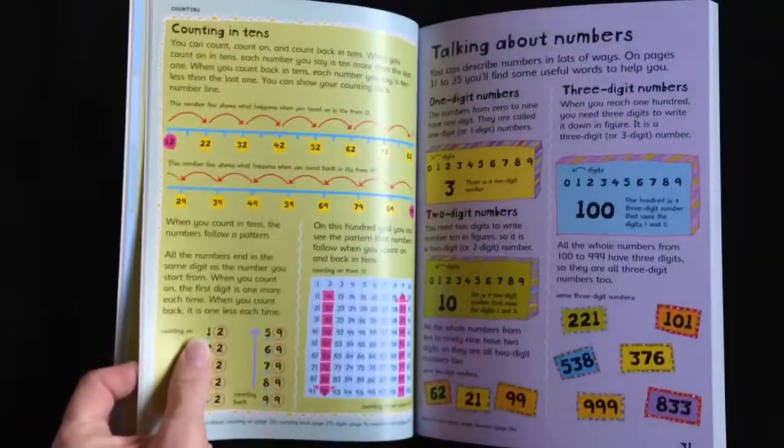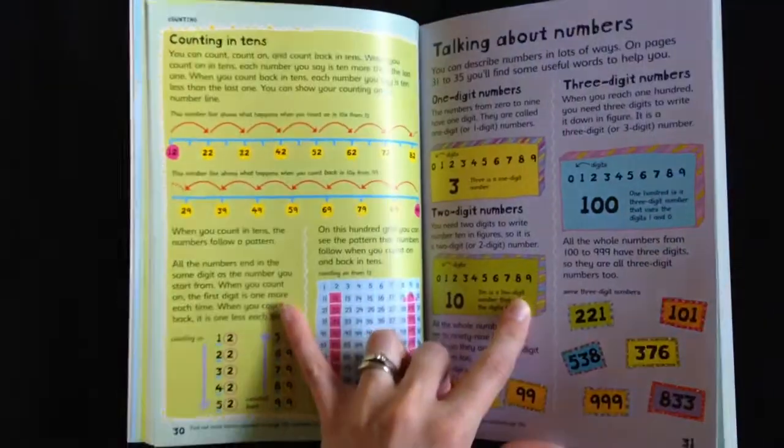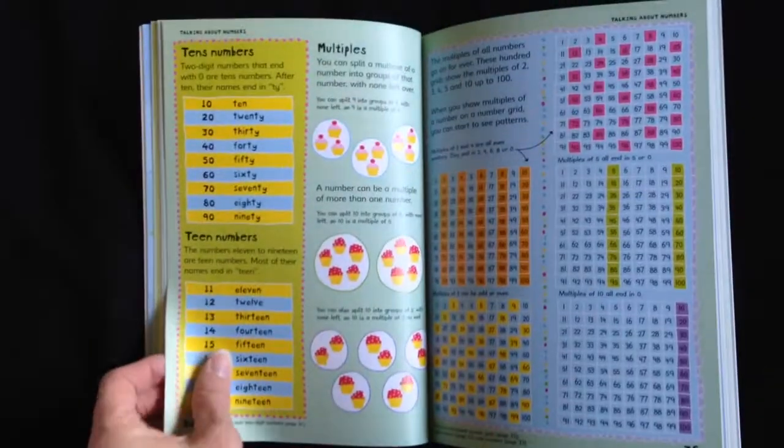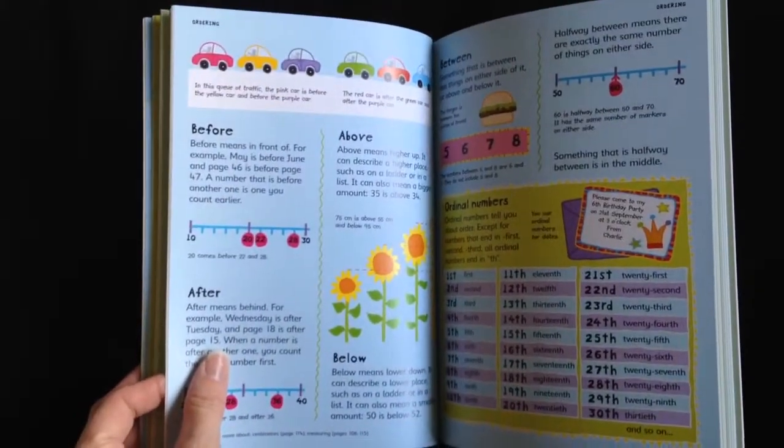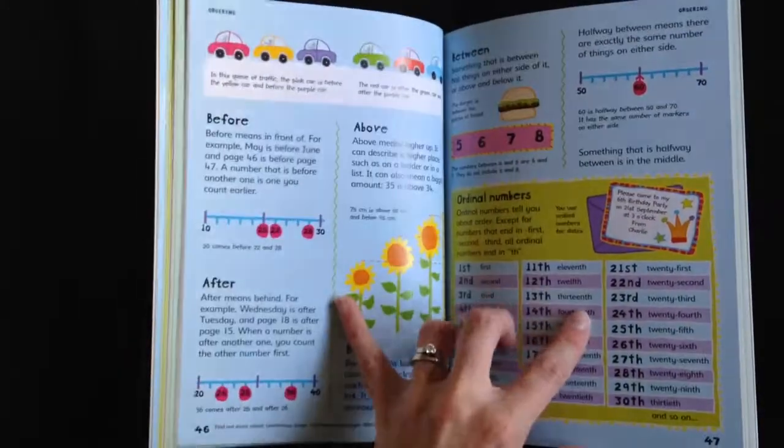There's over 500 math terms that they define for you and help explain. As well as some links that you can go to online to find more information about the topic itself.